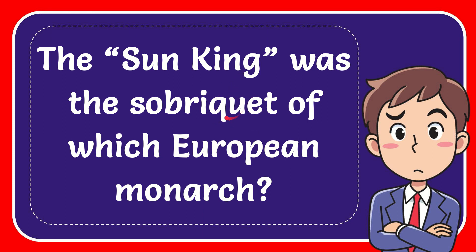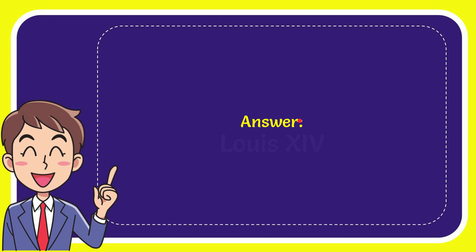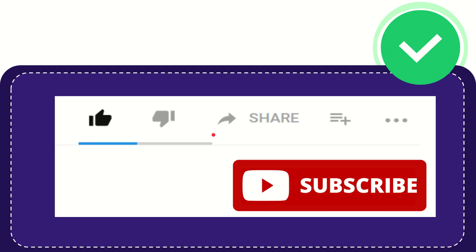In this video I'm going to give you the answer of this question. The question is: Sun King was a sobriquet of which European monarch? The answer is Louis XIV.